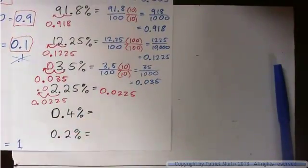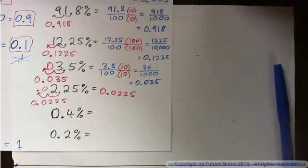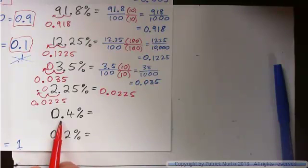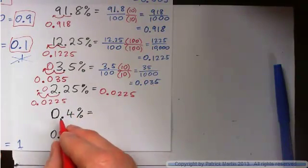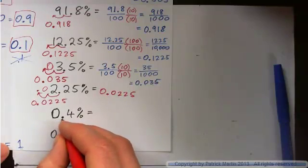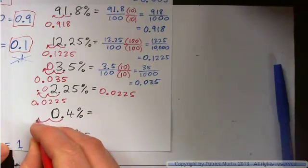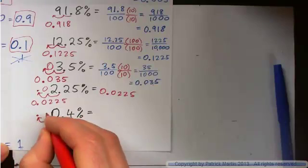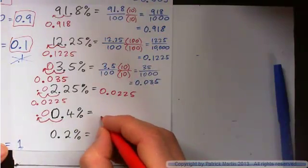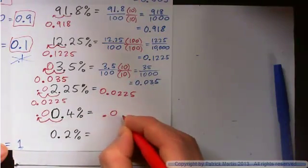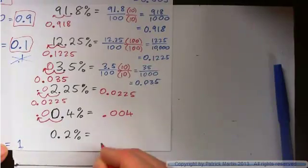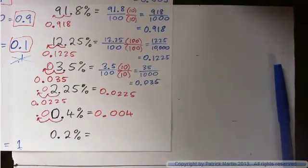How about 0.4 per cent? How many spaces do you move the decimal point? It's divided by 100. So it's 0.4 divided by 100 means you must move decimal space two spaces to the left. So it's 0.004.